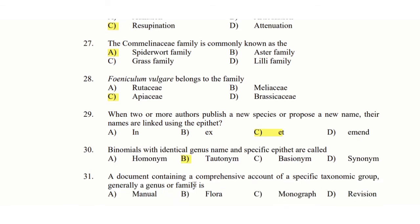31st question: The document containing a comprehensive account of a specific taxonomic group, generally a genus or a family, is — option A: Manual, option B: Flora, option C: Monograph, option D: Revision. These questions relate to plant systematics and taxonomy. The answer is option C: Monograph.